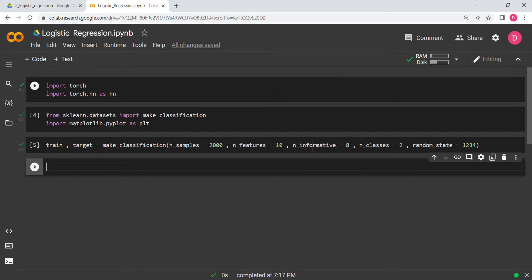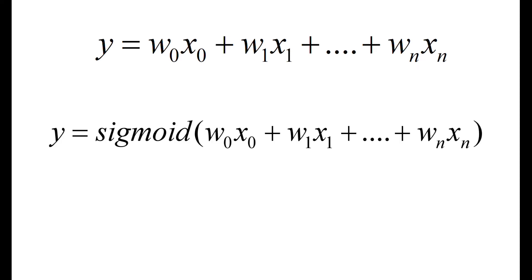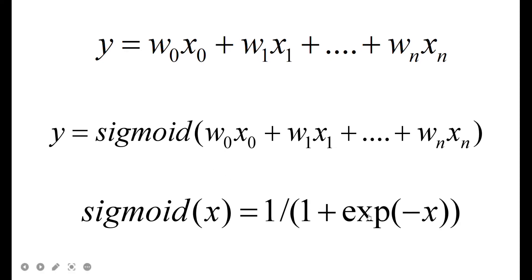Let me go back to the slides. If you remember, this was our linear regression formula: y equals this expression. In logistic regression, we just add one more thing — a sigmoid function. The linear part remains the same and the sigmoid is added on top. Sigmoid is basically 1 divided by 1 plus e to the negative x, that is sigmoid(x). I hope you already know this; otherwise check my logistic regression video on the channel.